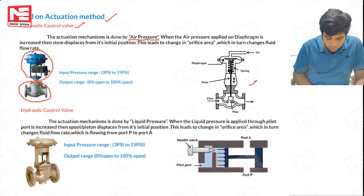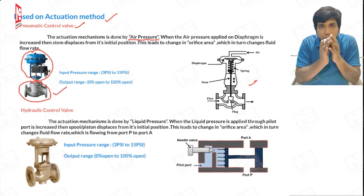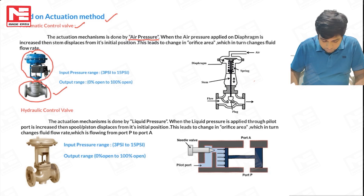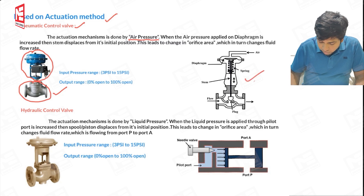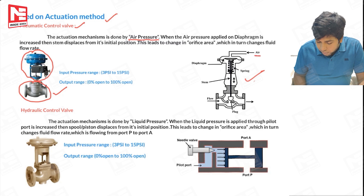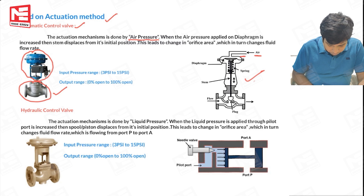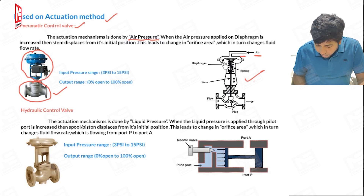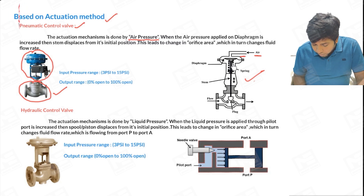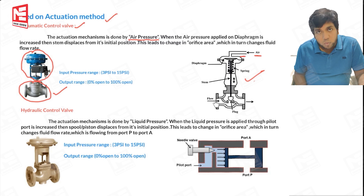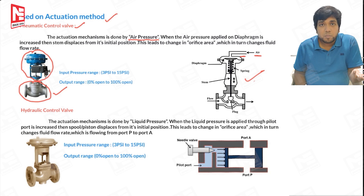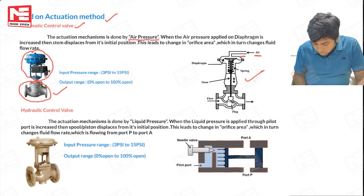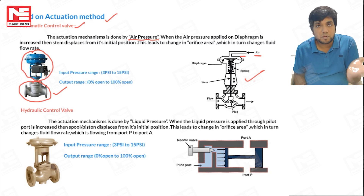When you buy a control valve in a shop it looks like a unit, but if you open it the internal structure reveals the components. Air is supplied through a port to the diaphragm. The diaphragm is elastic material, and it is attached to a stem at its lower end. We also have a spring above the stem. This supporting mechanism is called the bonnet. The fluid enters at the inlet and exits at the outlet port.